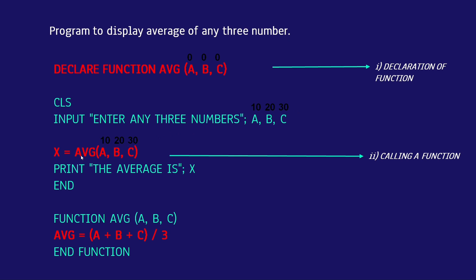After calling the function, the control goes directly to the function definition where the actual calculation code is written. The function definition is written as: FUNCTION abc(a, b, c) — you can copy this same from the declaration. Here, a, b, c are variables that receive the values passed from the main module. So this a receives 10, b receives 20, and c receives 30.